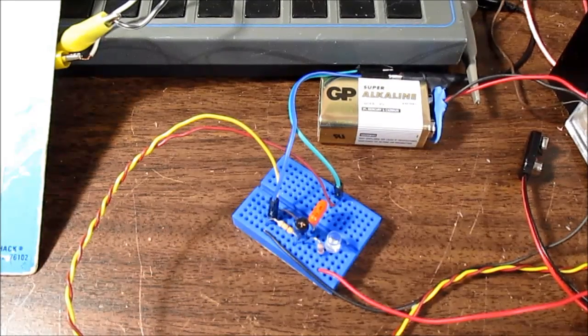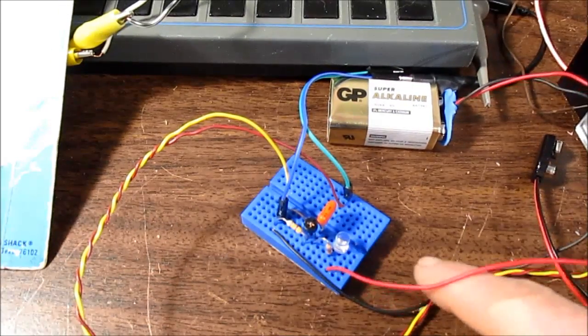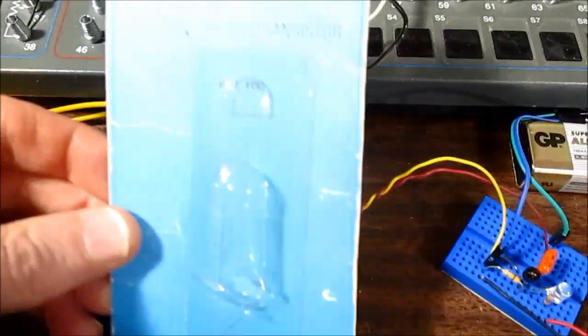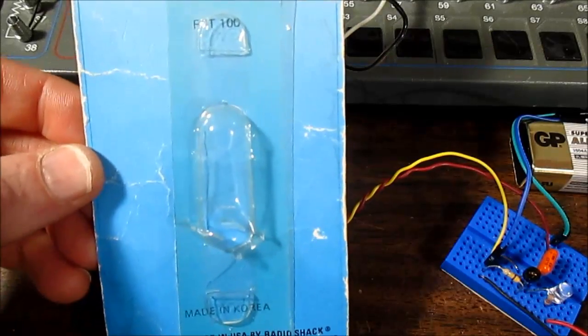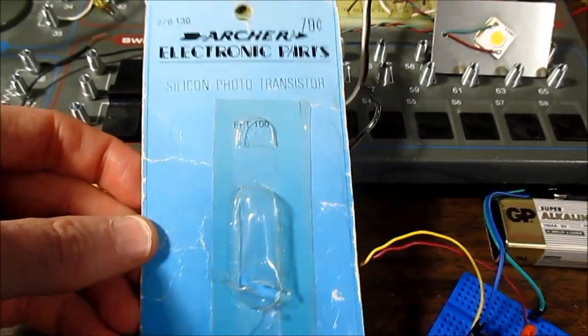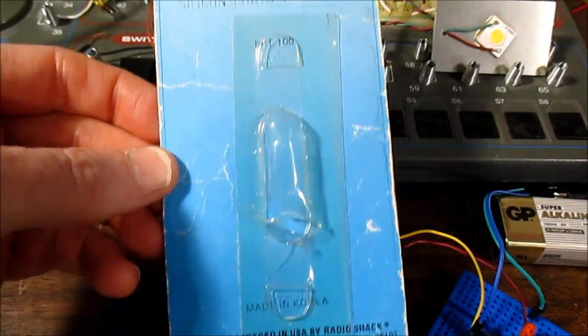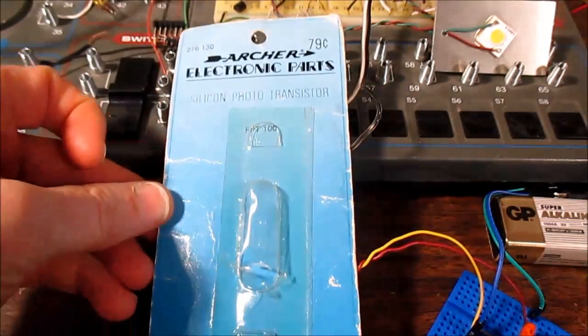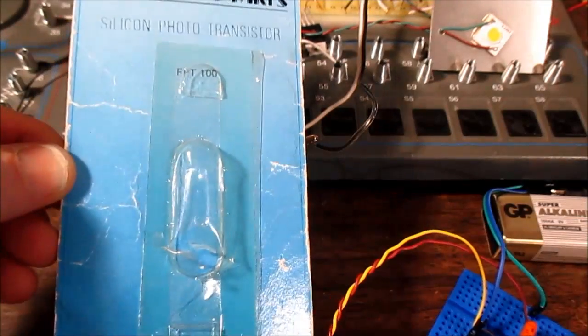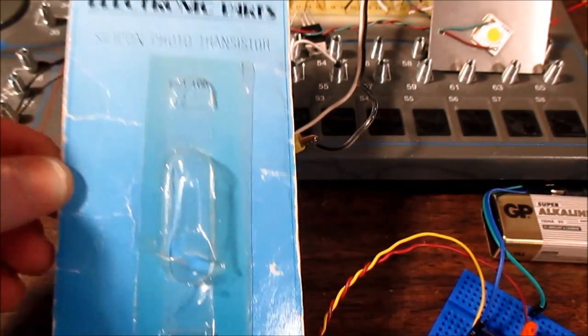Greetings, everyone. Today on the bench, I have a little phototransistor circuit set up right here. This is a FPT100 transistor, and if you're familiar with RadioShack, you might remember these old semiconductor packages in blue they used to have back in the day. $0.79. I just opened this and put it in the circuit.